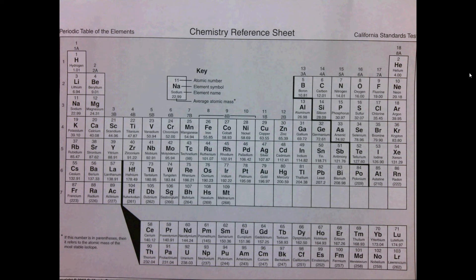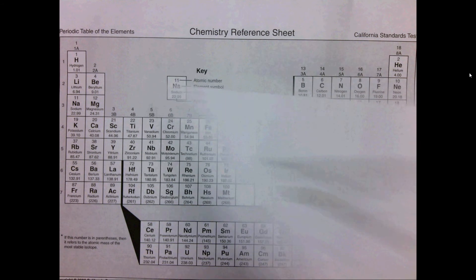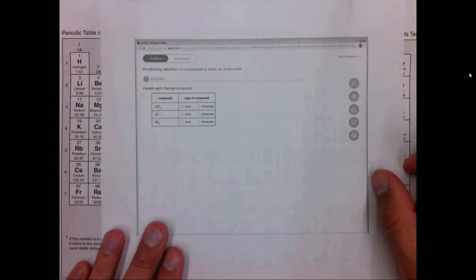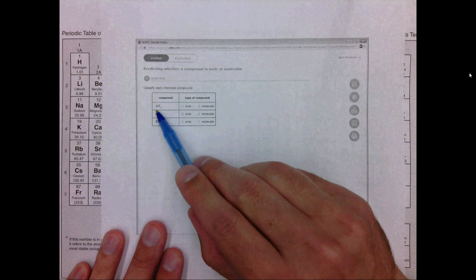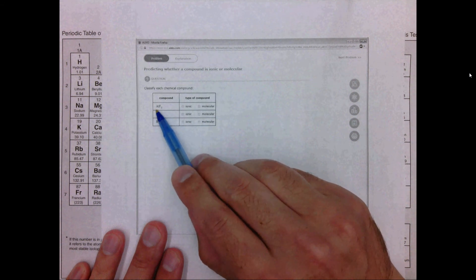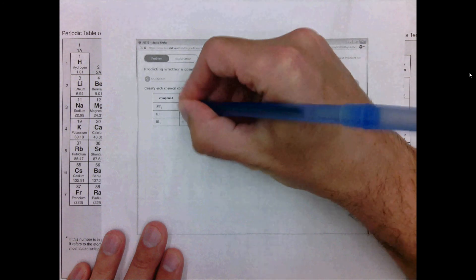So now looking at this question, it wants to know whether each of these compounds is ionic or covalent. The first one we have is AlF3. We just said aluminum is a metal, so this is an ionic compound.